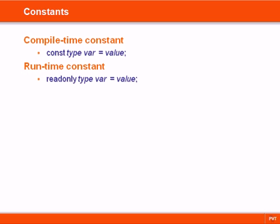In general, it's a good idea to always declare variables as constant if they don't need to be modified, because this makes sure that they won't be changed anywhere in the program by mistake, which in turn helps to prevent bugs.